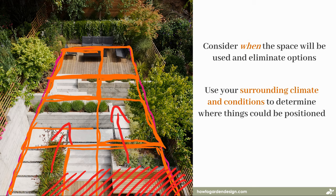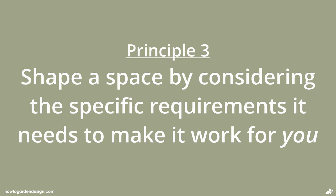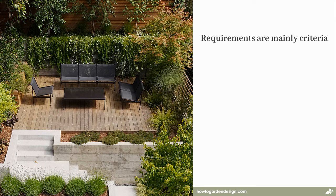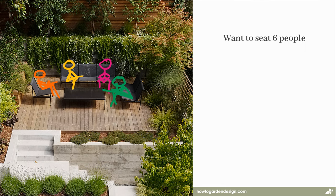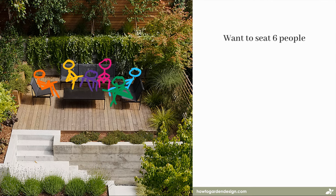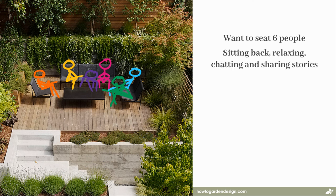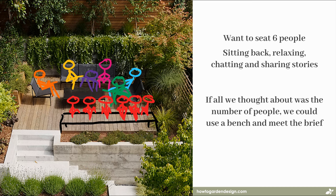Now we're coming up to the final principle — shaping a space by considering the specific requirements it needs to make it work for you. Our requirements in this case are mainly our criteria: how we want to use it and for how many people. One way to think about criteria when it comes to shaping and sizing a space is to use those criteria to determine the minimum viable area we need to make it work. Our clients want to seat around six people and they're sitting back, relaxing, chatting, and sharing stories. If all we thought about was the number of people, we could just put in a bench and say we've met the brief — it seats six, they can talk, we're all done.